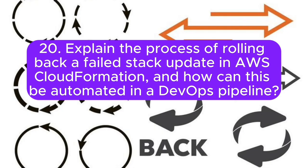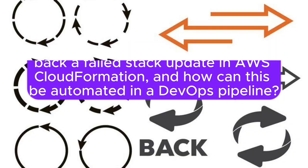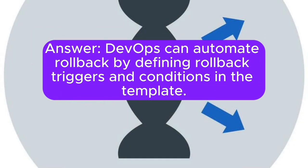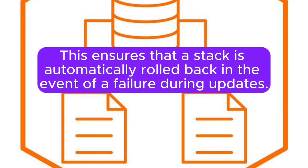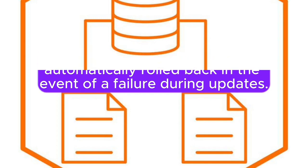Question 20: Explain the process of rolling back a failed stack update in AWS CloudFormation, and how can this be automated in a DevOps pipeline? Answer: DevOps can automate rollback by defining rollback triggers and conditions in the template. This ensures that a stack is automatically rolled back in the event of a failure during updates.